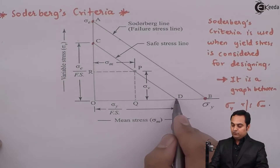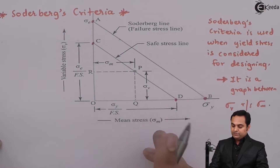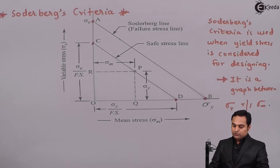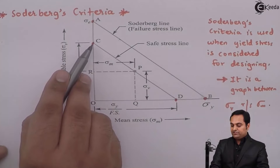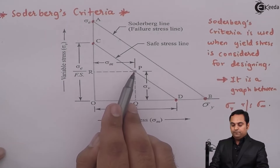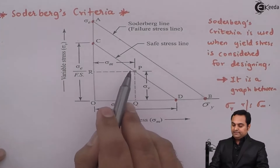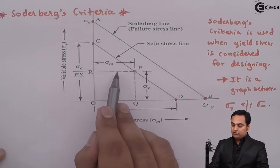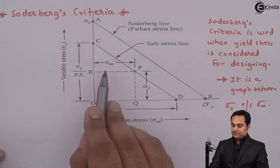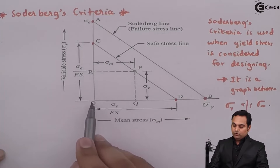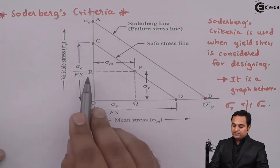Similarly, sigma_y is divided by the factor of safety, causing point B to shift to point D, since sigma_y divided by FOS is less than sigma_y. Parallel to line AB, we draw a line joining C and D. On line CD we take a midpoint called P, which is the design point. The horizontal distance of point P is sigma_m (mean stress) and the vertical distance is the variable stress.